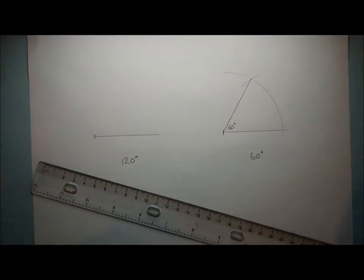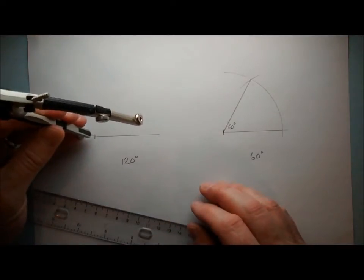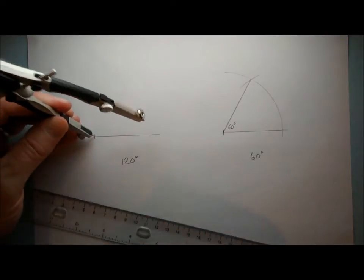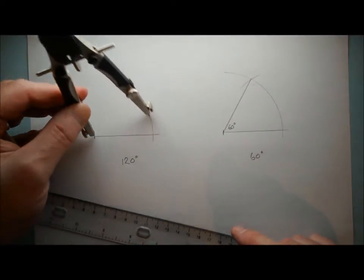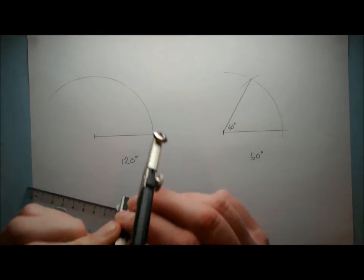So to make an angle of 120 degrees, we do a very similar kind of thing, but we just have to extend it a little bit further. So what we have to do is compass point on the end here, draw an arc that goes all the way round, beyond 90 degrees there,